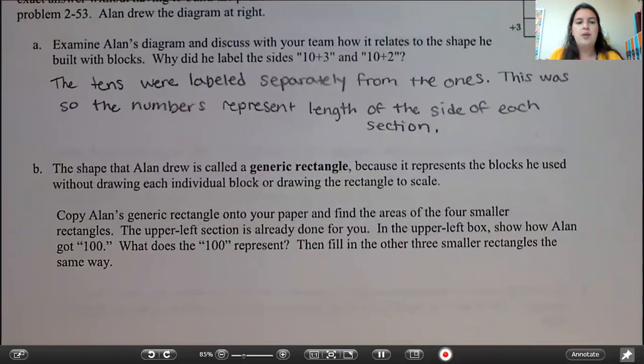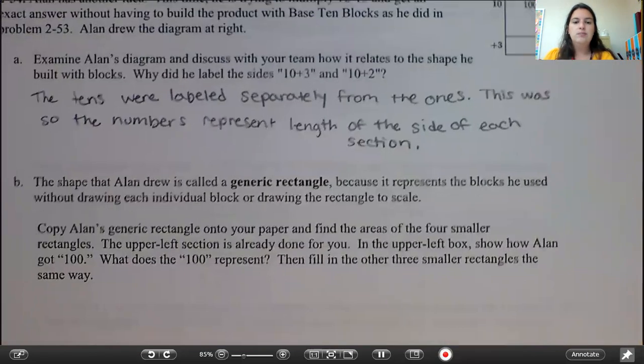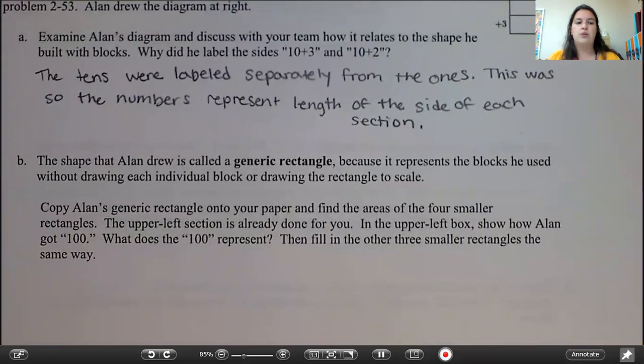Part B says the shape that Alan drew is called a generic rectangle. That is, this right here. It's called a generic rectangle because it represents the blocks he used without drawing each individual block or drawing the rectangle to scale.